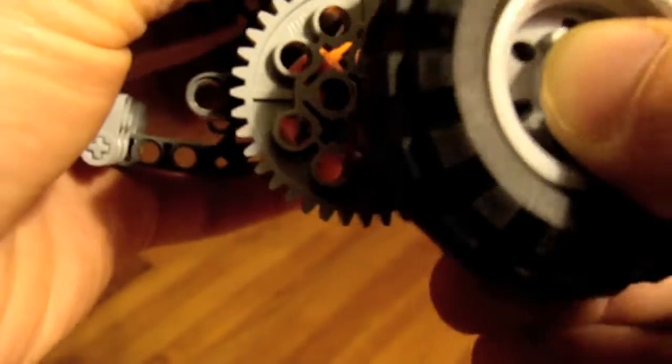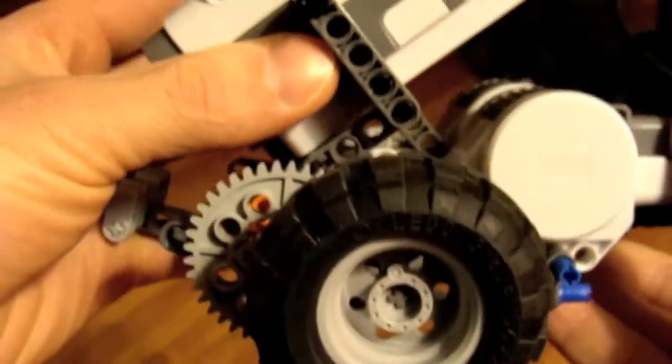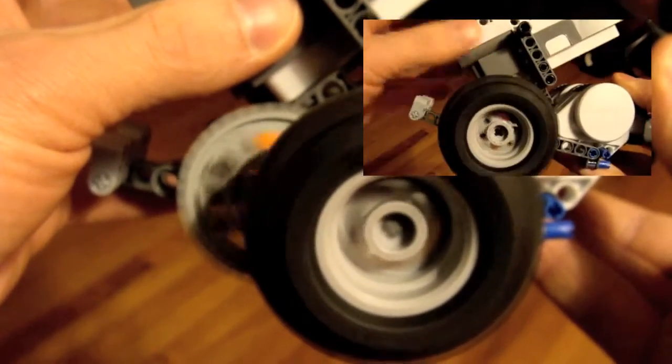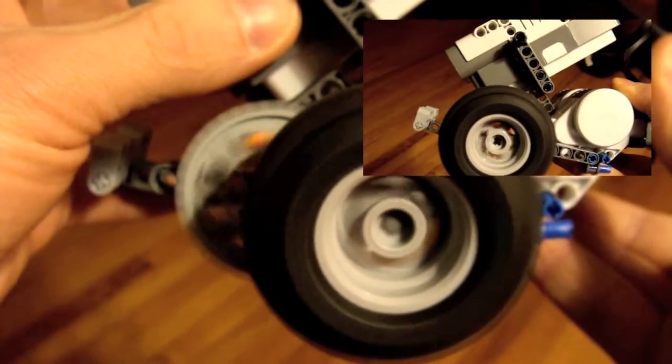When you put the gears this way, it's geared for speed. Now we can try it out with the wheel on it. You can see it's turning very quickly, much faster than the wheel that had no gears.